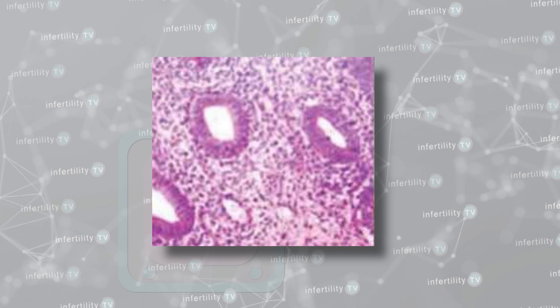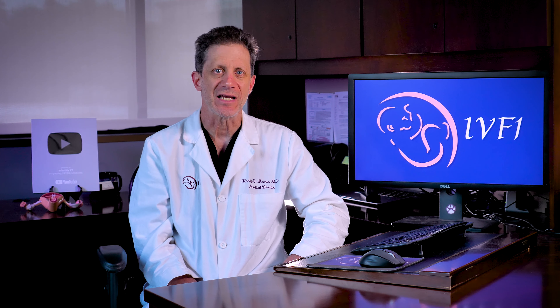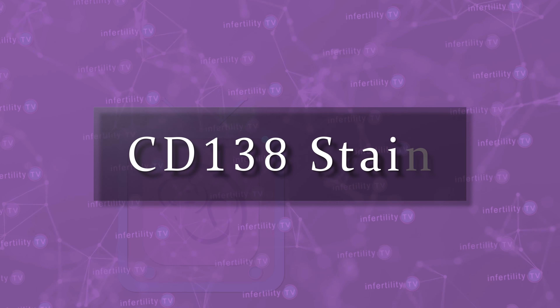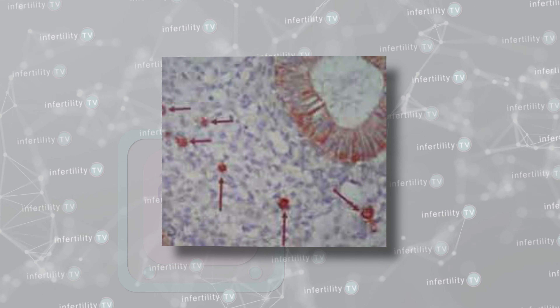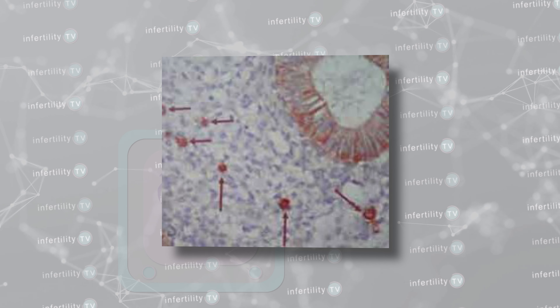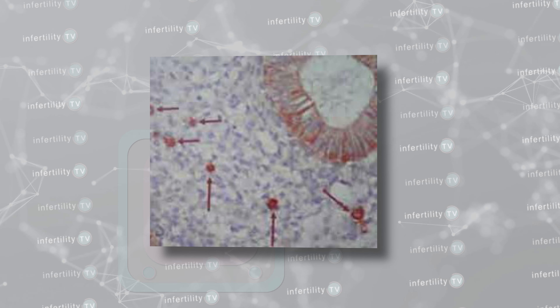Can you see the plasma cells in this biopsy specimen? I can't. The best way is to look at the endometrium using a special type of microscopic staining procedure known as a CD138 stain. This highlights the plasma cells and makes it easy for anybody to see. Many women with a healthy uterus may have a small number of plasma cells. The patients that we say have chronic endometritis have a larger number of plasma cells visible under the microscope.